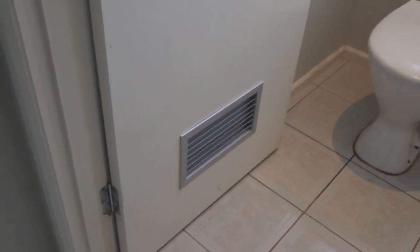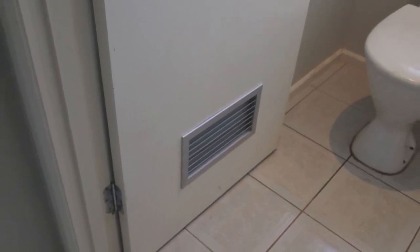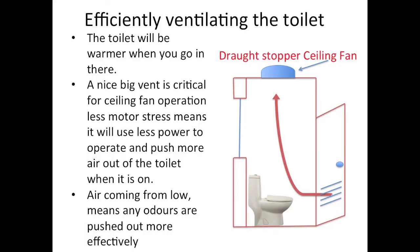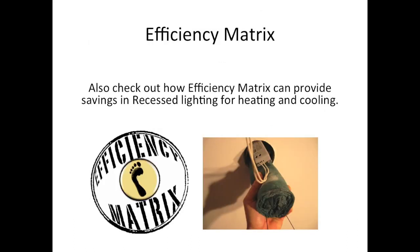When draft proofing your house, ensure that high humidity activity rooms such as showers, cooking benchtops, and even gas heaters or wood fires have sufficient ventilation. Seek advice from a professional if you aren't sure.